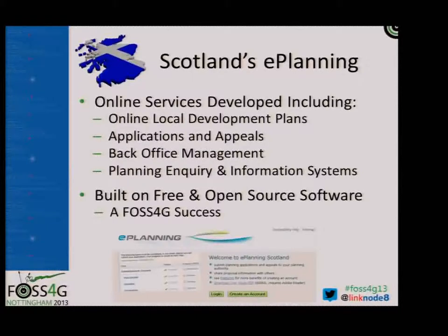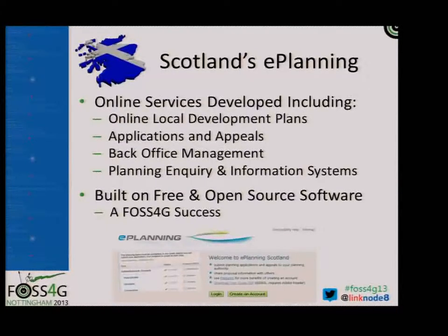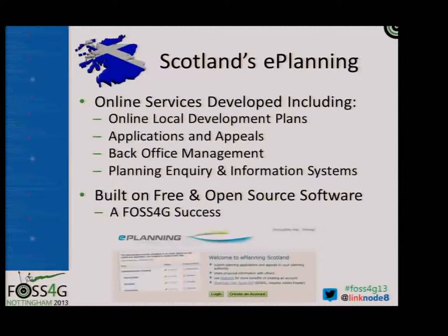So, an actual example — what did we do in Scotland? In about 2006-2007, the Scottish government decided they needed to kick all the local authorities up the butt and create some standardised ways to force them to provide greater levels of access to geospatial information and planning information. They devised four work streams to enable this, including Online Applications and Appeals, Online Planning Information, and Online Local Development Plans — essentially central government-funded ways to provide greater access to information.